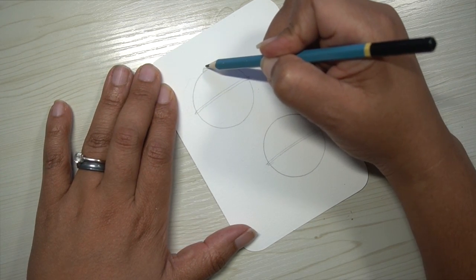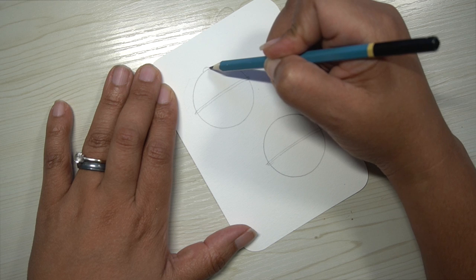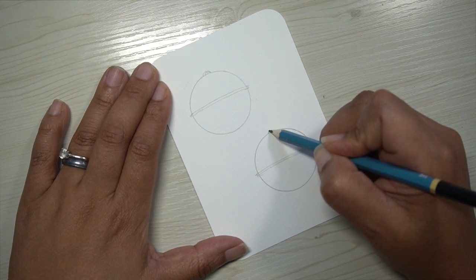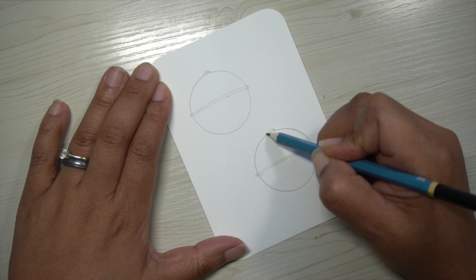On the top of each circle, we're going to make like a little hook to hang the string by. So we're going to do that at the top of both of these circles.